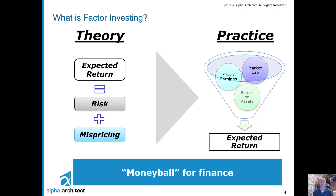What is factor investing? The easiest way to explain it is it's essentially Moneyball for finance. In finance, expected returns come from two buckets: a risk bucket — you get extra return because you take on more risk — and a mispricing bucket — you could get extra or less return depending on the valuation at which you purchase an asset. Factor investing looks at characteristics of securities to help predict future expected returns, mapping those characteristics to elements of risk and mispricing.